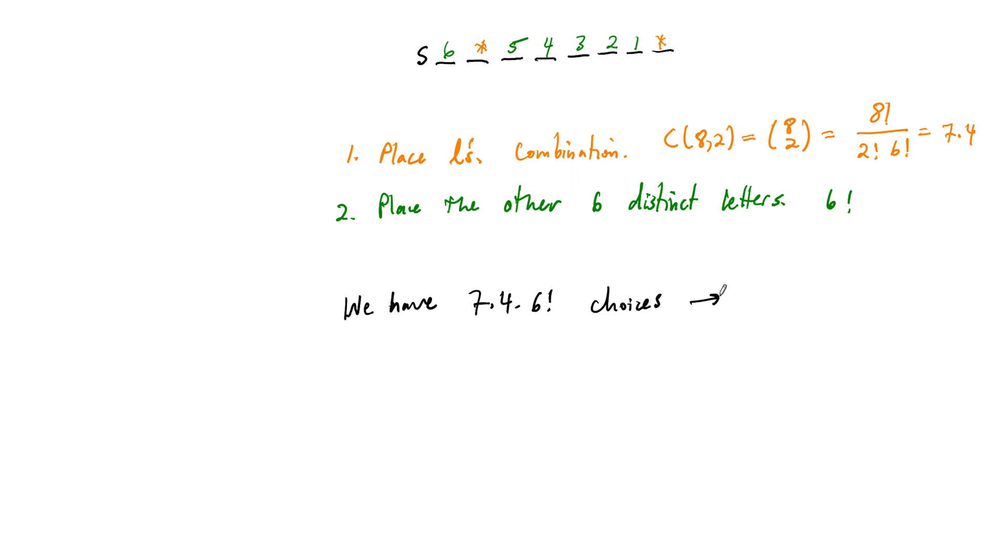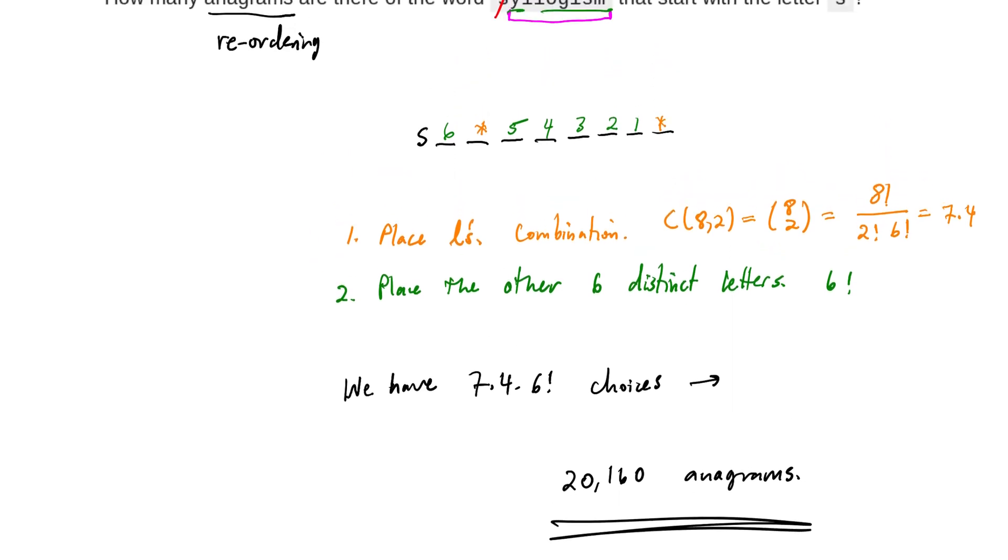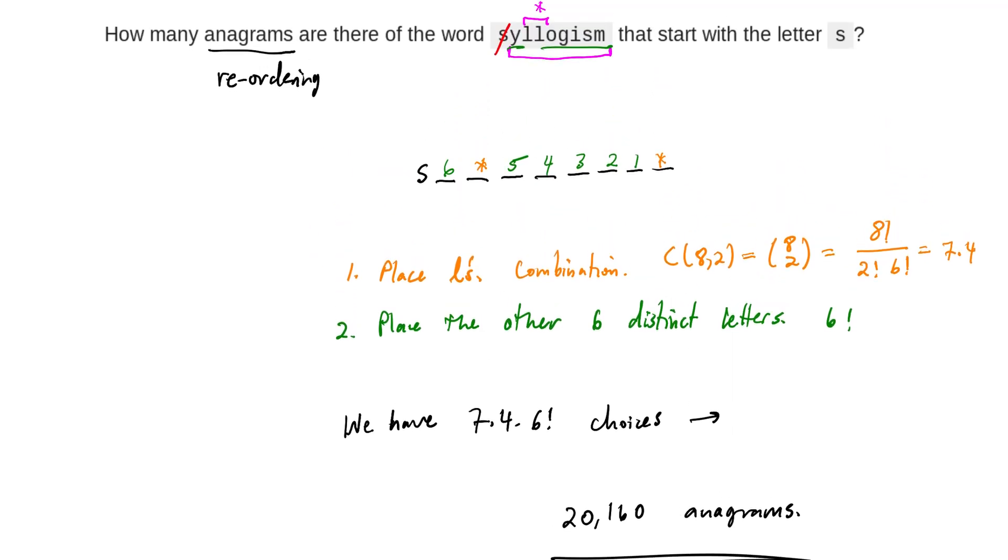And so altogether, this means that we have, if you type this in a calculator or just work it out very carefully, you get 20,160 anagrams. So that's the number of anagrams of the word syllogism that start with the letter S.